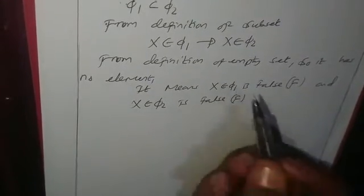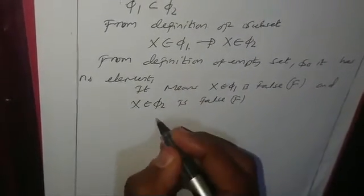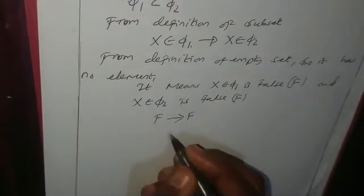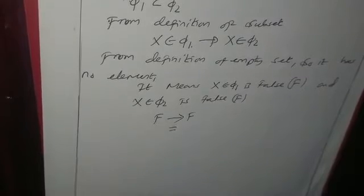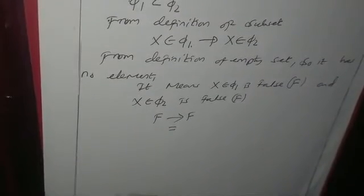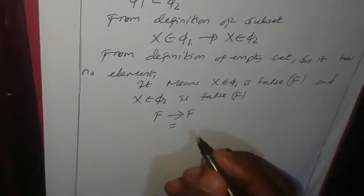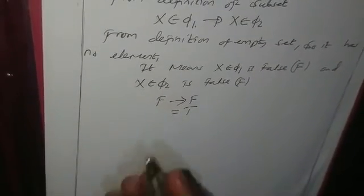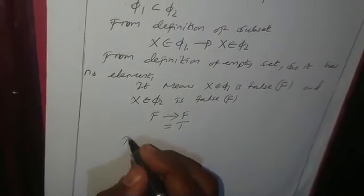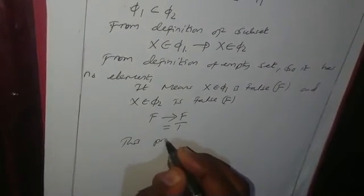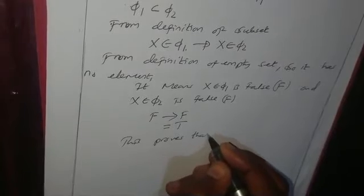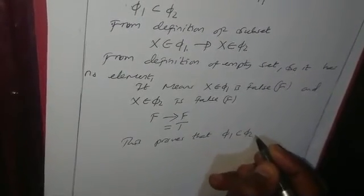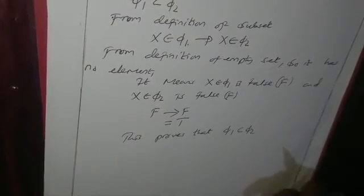This means the implication becomes false implies false. From the definition of implication, we know that false implies false is a statement which gives a truth value of true. This proves that empty set one is a subset of empty set two.